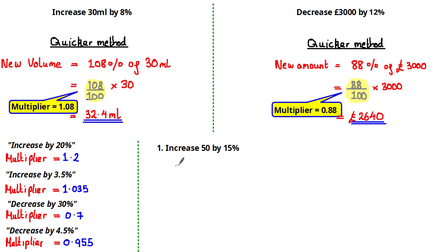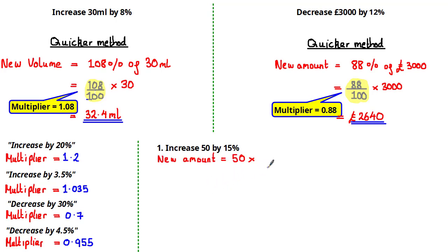Let's use multipliers to increase and decrease amounts. First: increase 50 by 15%. Since we are increasing, we take 115% of 50 — calculated as 100 plus 15. The new amount equals 50 times the multiplier 1.15, which is the decimal equivalent of 115%. Using a calculator gives an answer of 57.5.